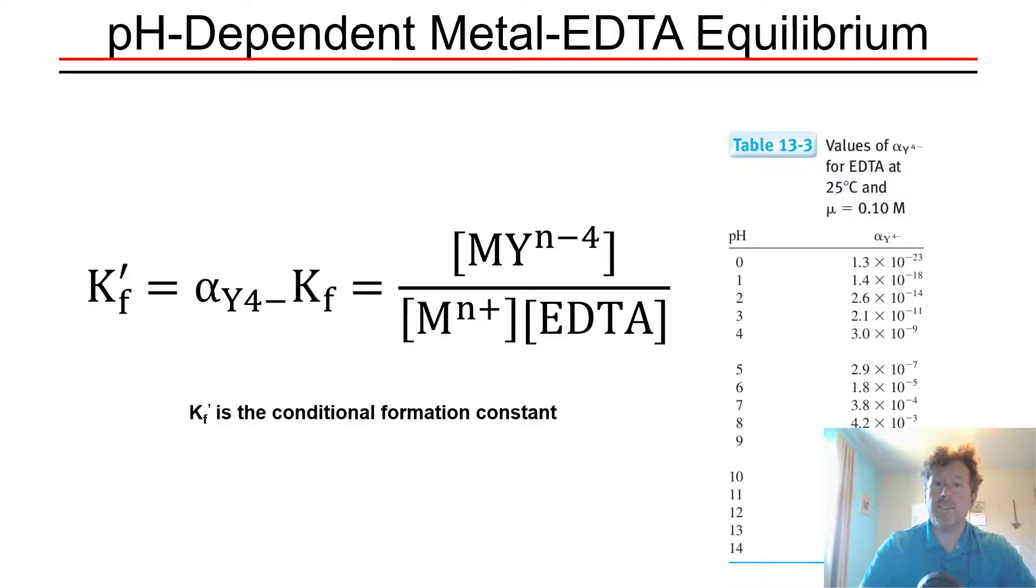So in today's lectures, we're going to specifically highlight how during an EDTA titration we can use the conditional formation constant to calculate the concentration of free metal cation at any point during the titration. The plot of the metal cation concentration versus the volume of EDTA added is broadly what defines the EDTA titration curve.